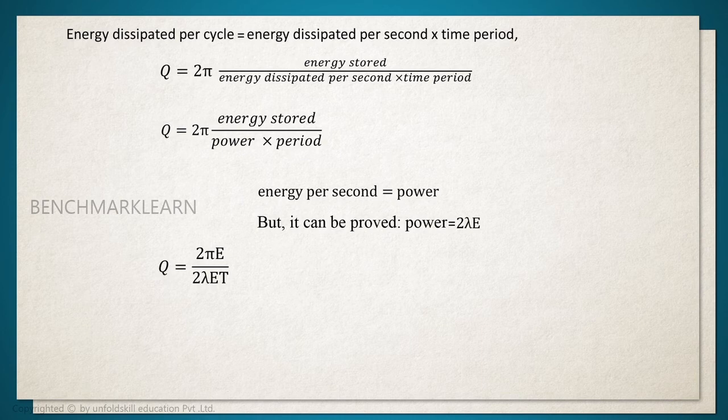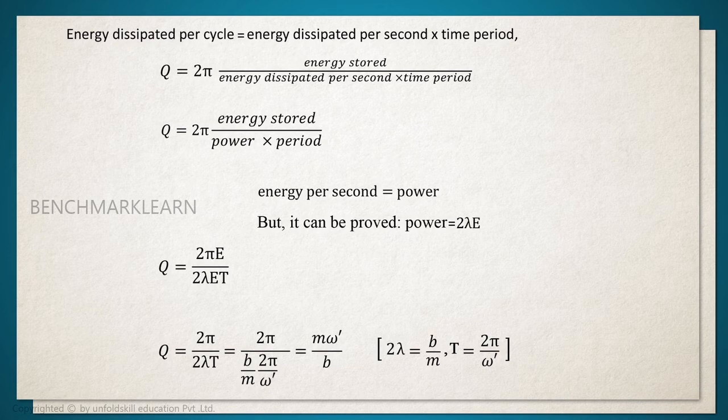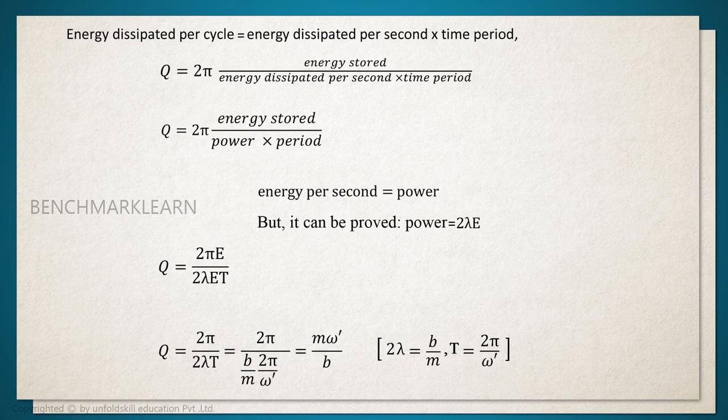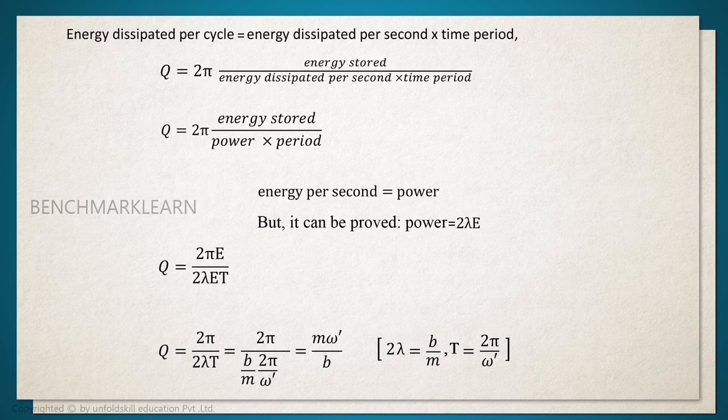That is equal to 2π divided by 2λT. This is equal to 2π divided by B by m into 2π by ω′, where 2π by ω′ is the time period and B by m is equal to 2λ.